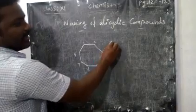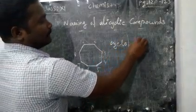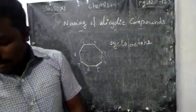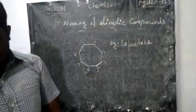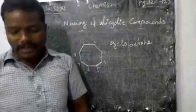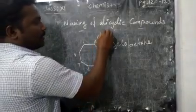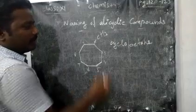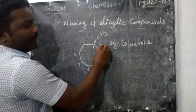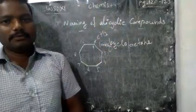For the 8-carbon ring with one methyl substituent, the name is 1-methylcyclooctane. You need to give the number for the carbon bearing the CH₃ group. So it is 1-methylcyclooctane.